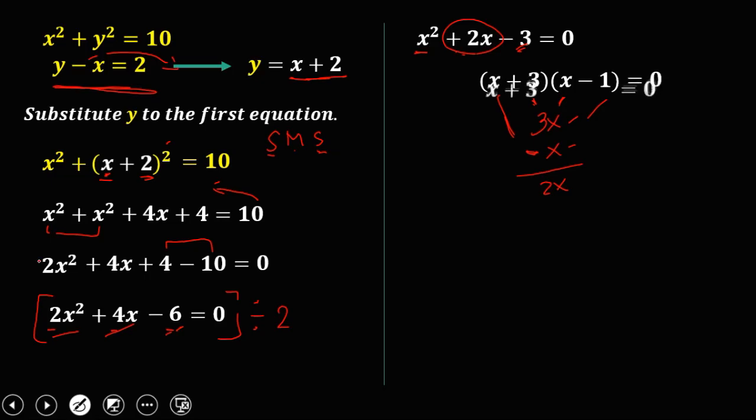Then equate this factor to 0. So we have x plus 3 equals 0. Then transpose to solve for x. So x is negative 3.